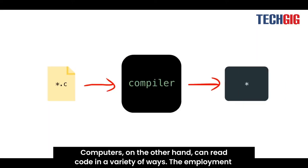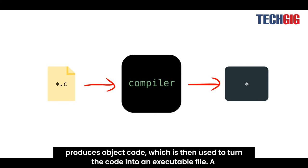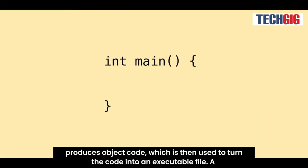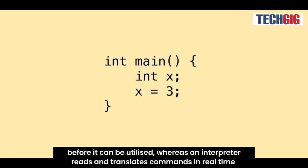Computers, on the other hand, can read code in a variety of ways. The employment of a compiler is another option. Instead of using an interpreter, a compiler produces object code, which is then used to turn the code into an executable file. A compiler reads the program and converts it into other programming languages before it can be utilized, whereas an interpreter reads and translates commands in real-time.